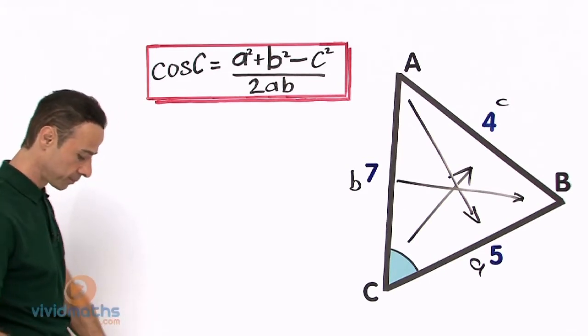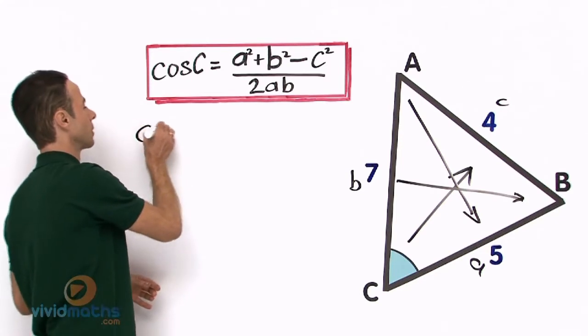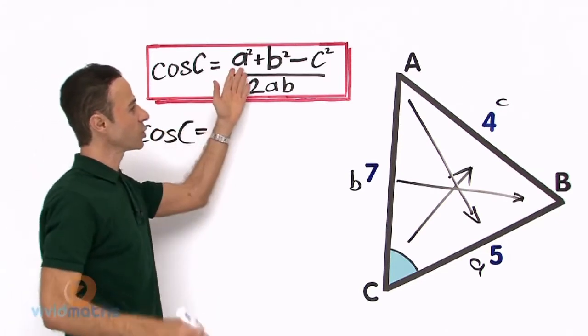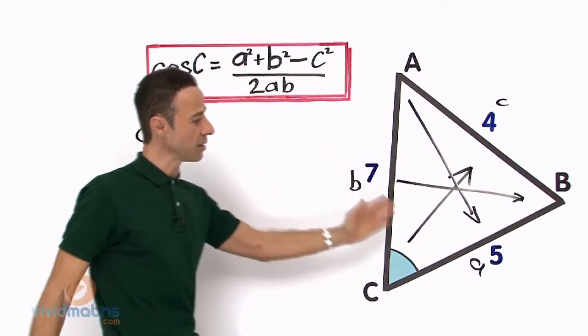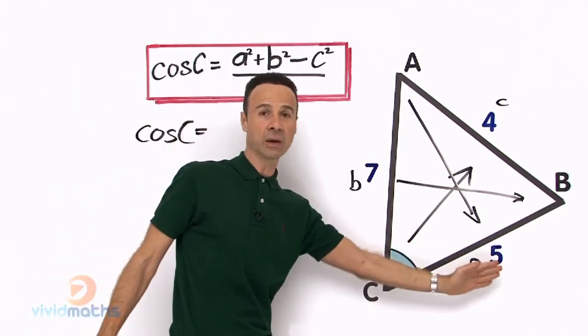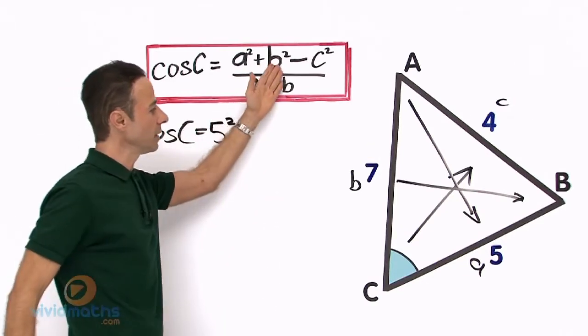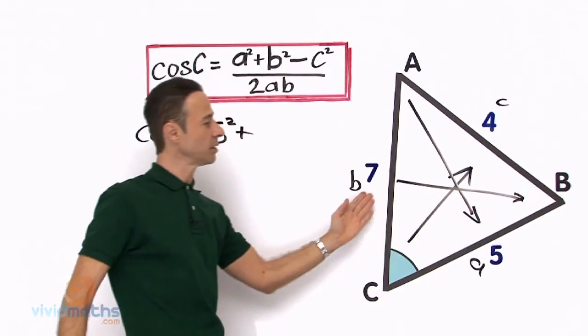So first off we have cos C, which is what we are looking for, and that equals a². Now let us go to a², that is down here as 5. We labelled little a equals 5, so let us put that in, 5² plus little b.